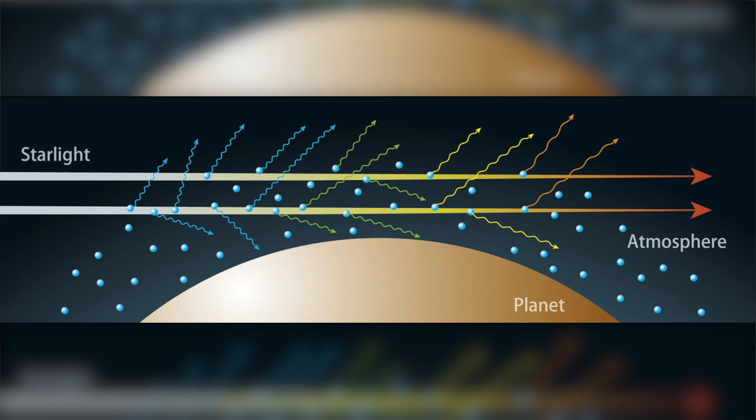We use transmission spectroscopy. This method has been mentioned a few times in previous Cool Worlds videos, but just in case you need a refresher: transmission spectroscopy measures what's in a planet's atmosphere by looking for molecular fingerprints in the starlight that gets filtered through a planet's atmosphere as it passes between us and its star.